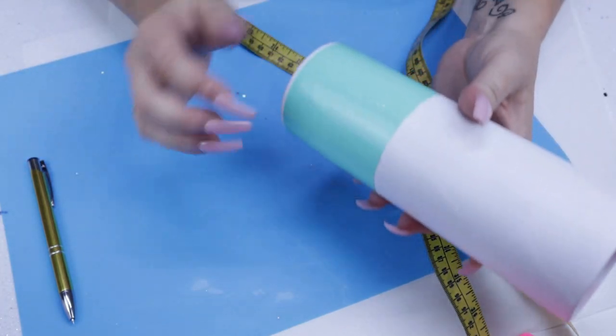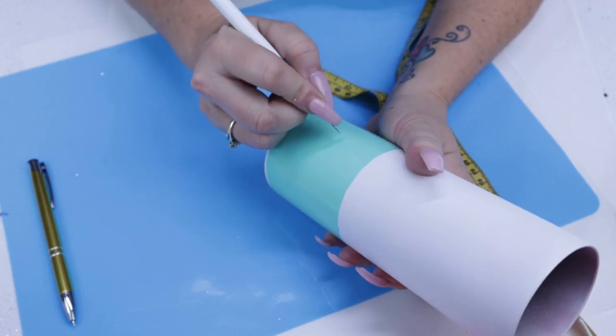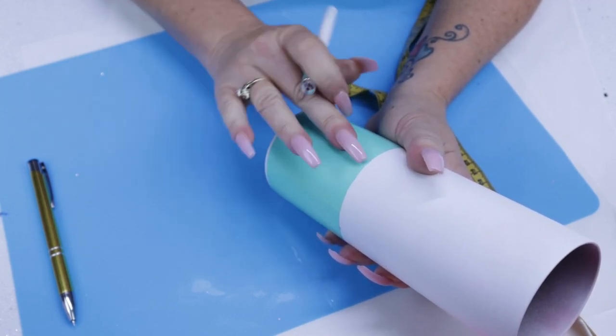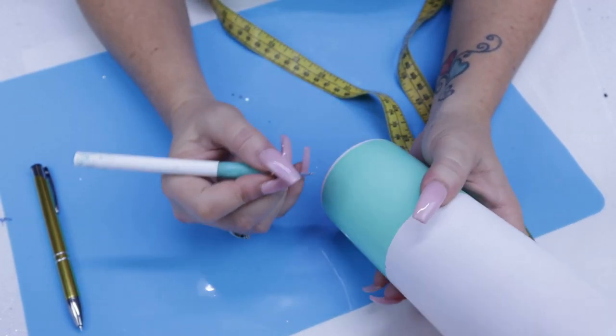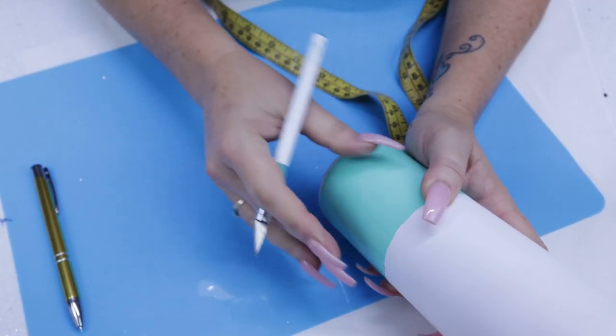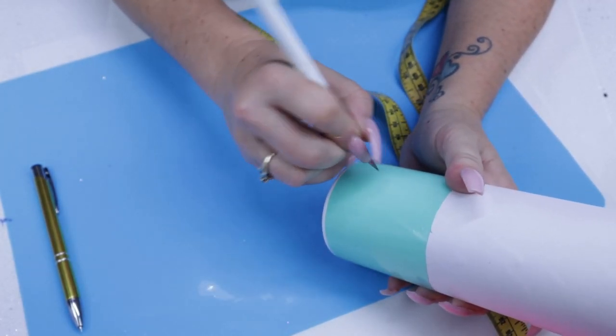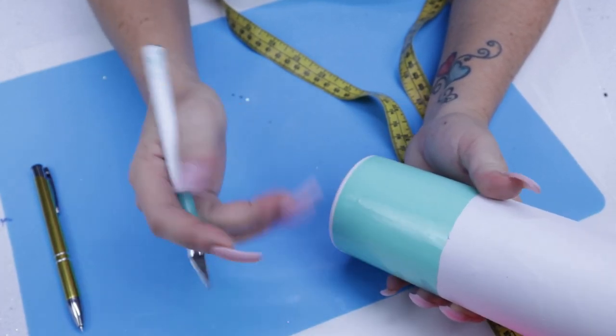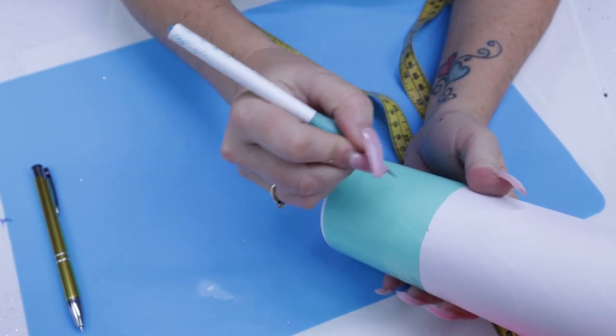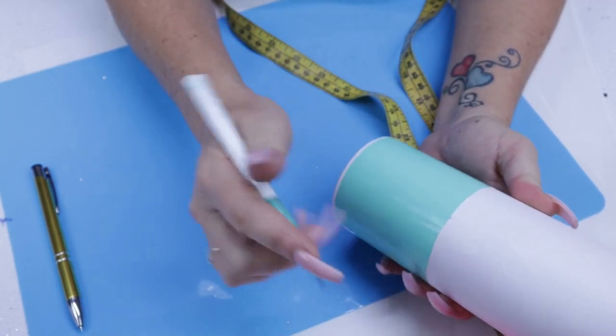Unfortunately, I did get some air pockets when doing this method, so you'll see here I'm just going to take my X-Acto knife and puncture the air pocket and then remove the air. You want to make sure that you go over your tumbler with the vinyl pretty thoroughly. You'll see soon that I actually missed a nice size air pocket, but then I did go back and recover that before the epoxy.